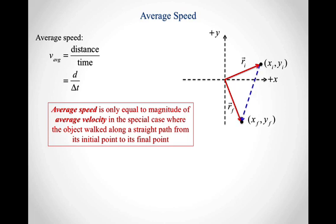So again, if it walked this way, and it could have stopped somewhere along there, but as long as it didn't turn around and start going back, then the average speed and the magnitude of the average velocity are going to be the same. But if the object turned at all, whether it turned around or turned and walked in a different direction, then those two things are not going to be the same.